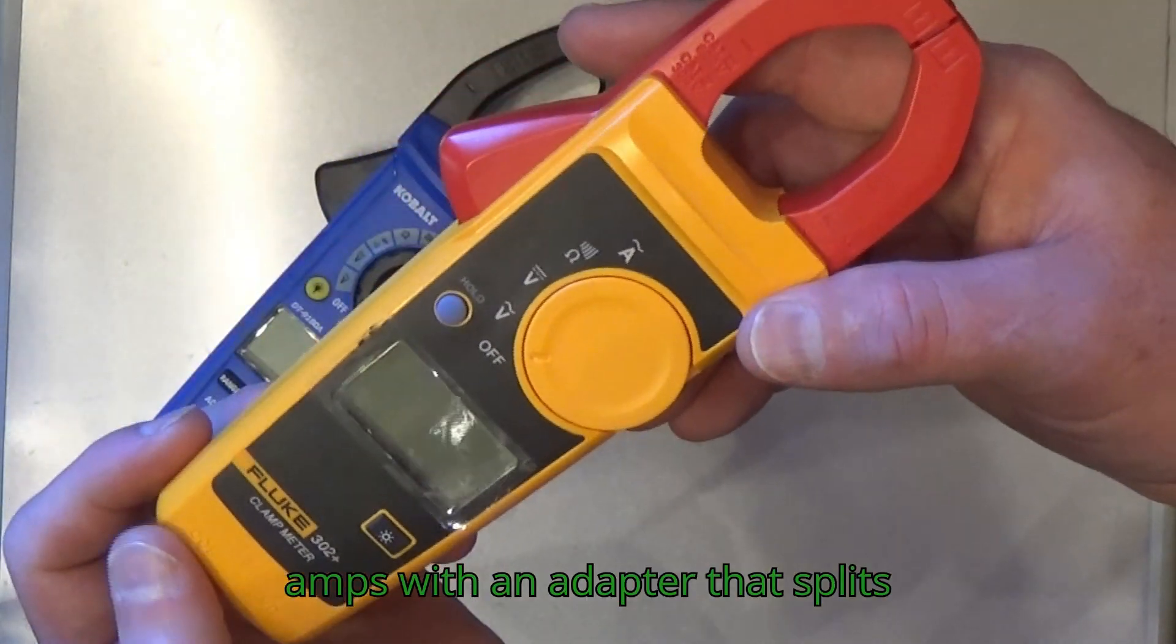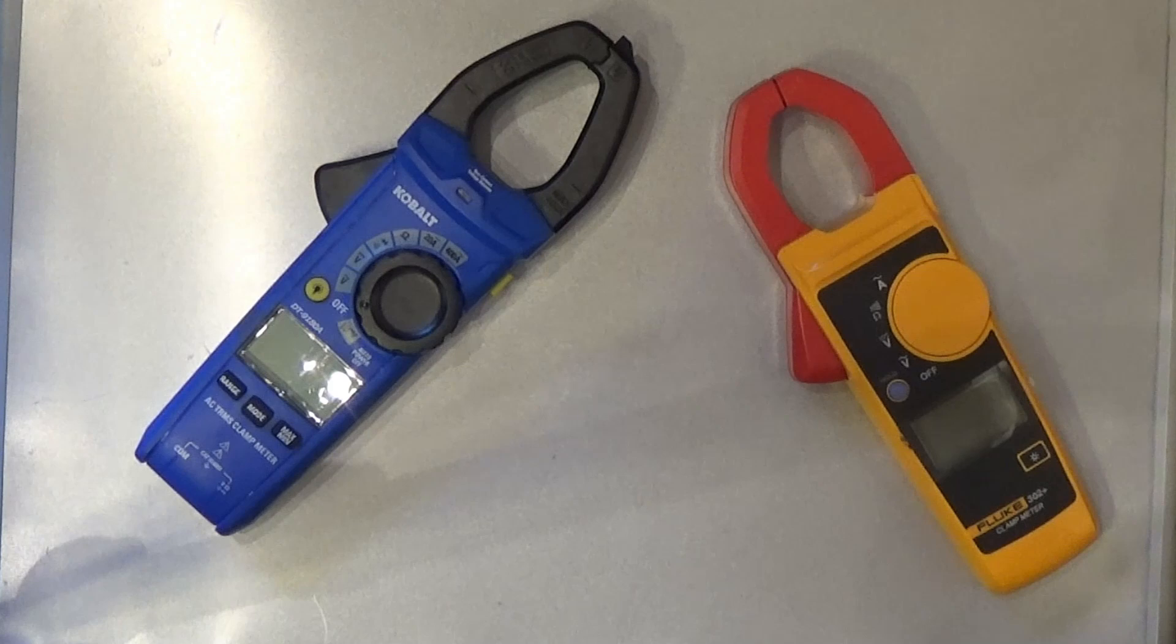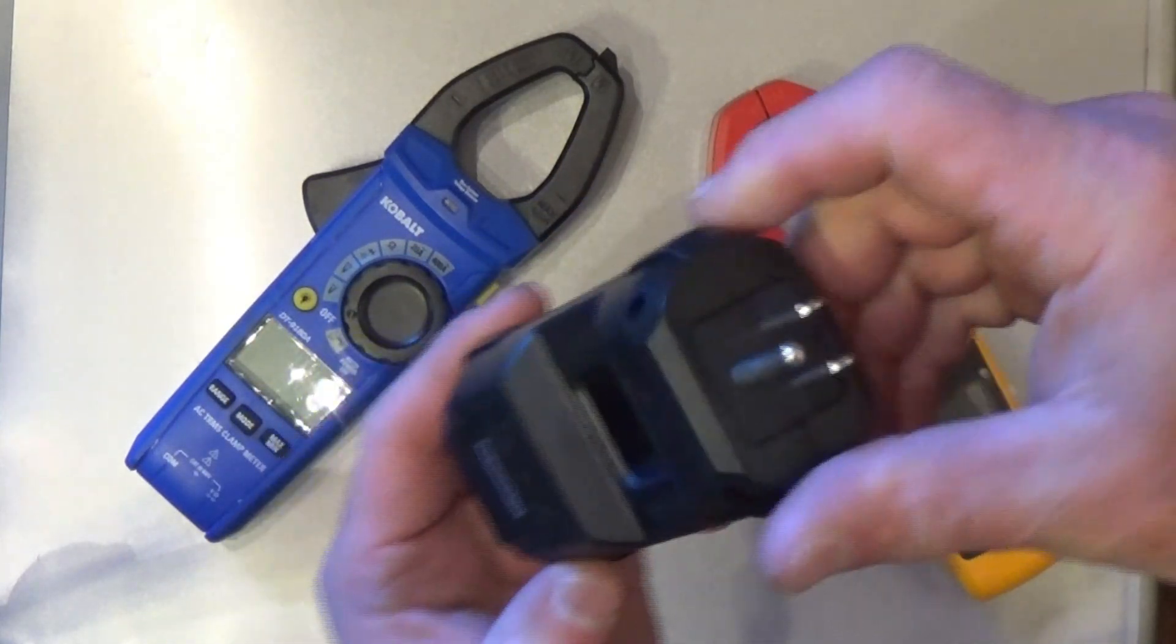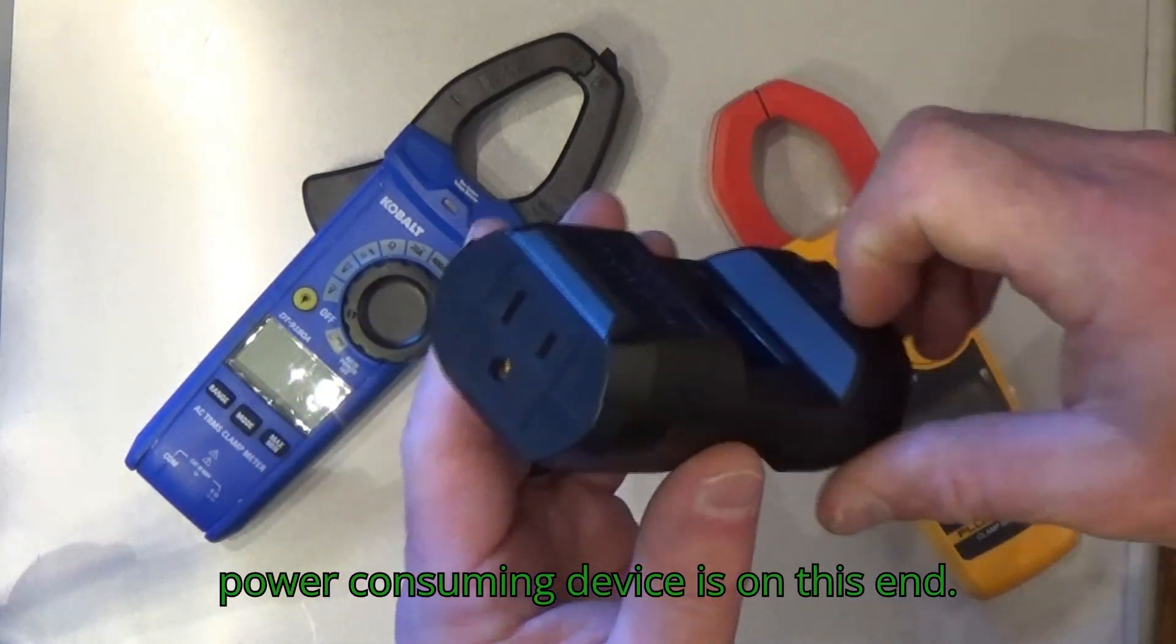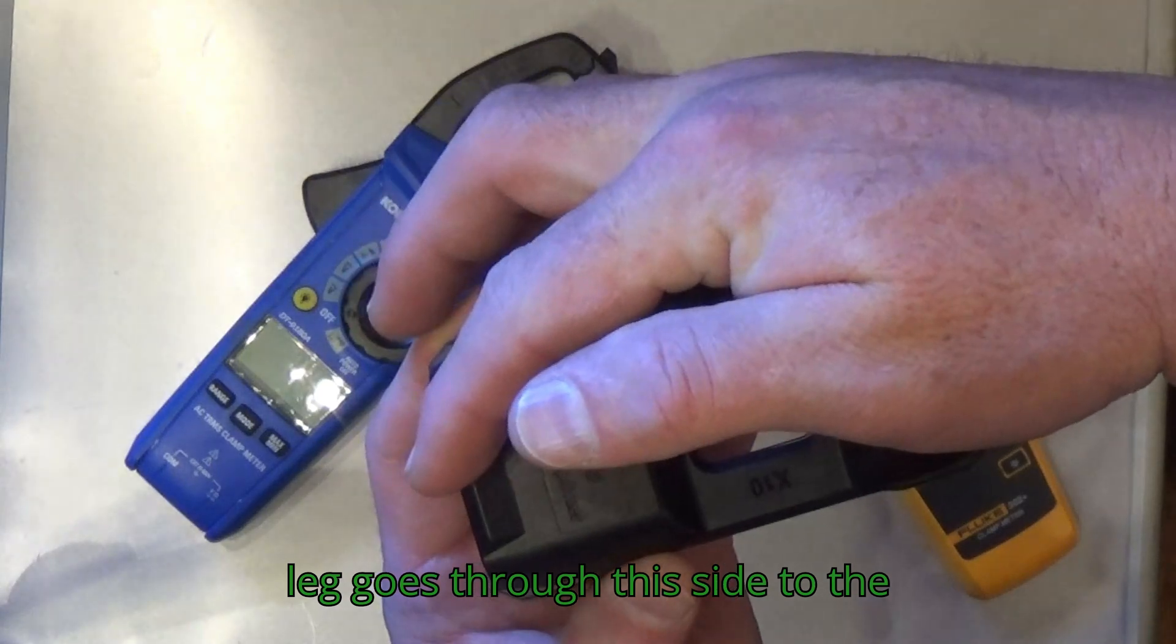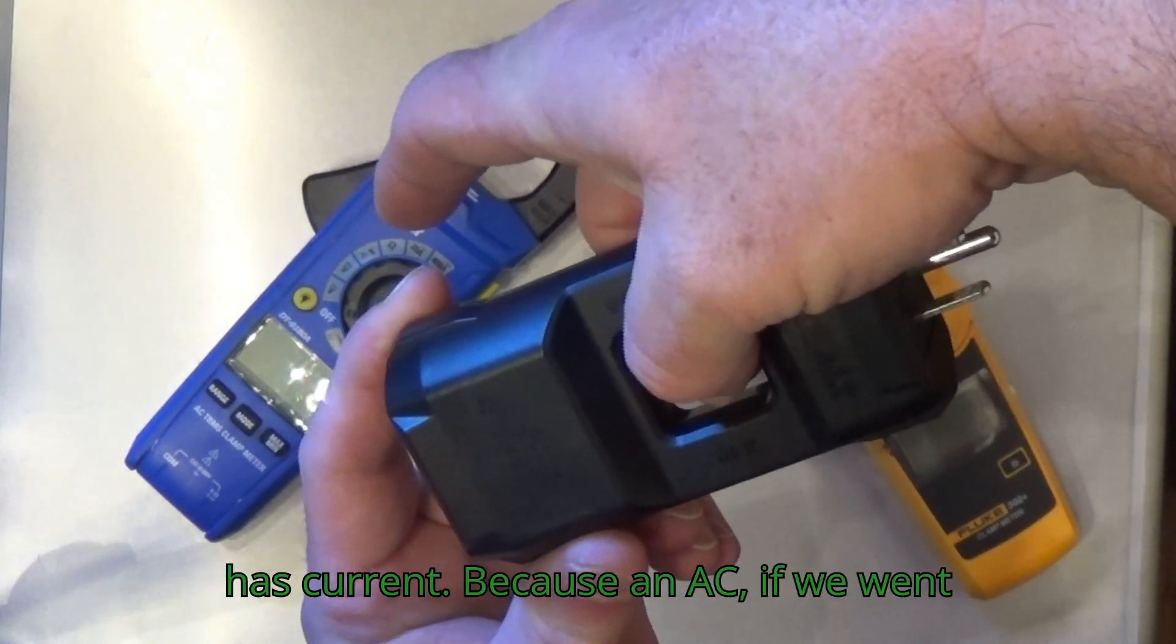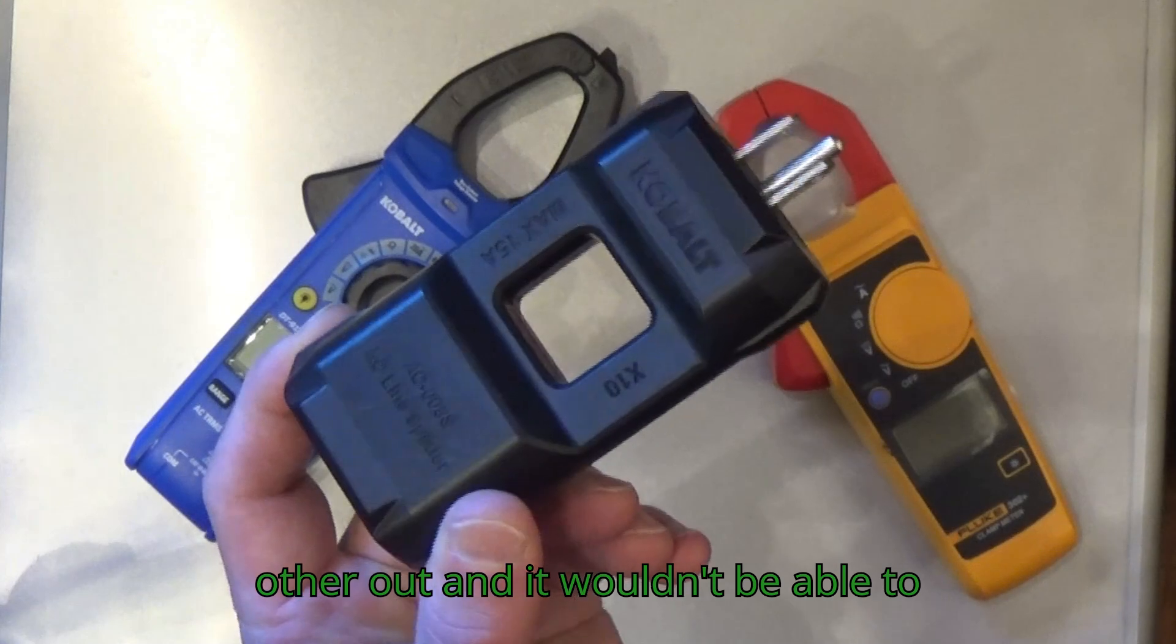What I'm going to do is show you how to measure amps with an adapter that splits a regular AC cable. It plugs in just like anything else, and then you plug in whatever the power consuming device is on this end. What happens is one leg goes through this side to the output, the neutral leg goes to the other side. This is how a clamp meter works: the meter goes around one leg that has current. If we went around both legs, that would cancel each other out and it wouldn't be able to measure current.